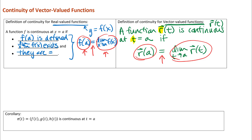Below we have a corollary, which is a direct result of something we've already talked about. Let's think about what this definition of continuity exactly means in terms of how you examine whether a function output or limit exists. If r of t equals ⟨f(t), g(t), h(t)⟩, we find r of a by evaluating each component function at a — finding the output for each component function gives us the overall output.